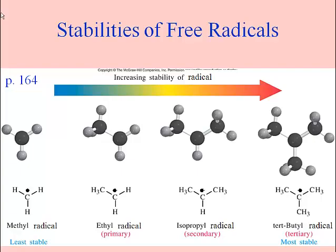Here's that slide from part 9, and now we're up to part 10. Notice that these radicals are in the same order as the carbocations were. I just put the big dot to represent the unpaired electron on top of what used to be a plus sign, so that's why these dots look a little strange here. For tertiary radicals, they are the most stable, just like the tertiary carbocations. Methyl radicals are least stable, just like the corresponding carbocation would be.